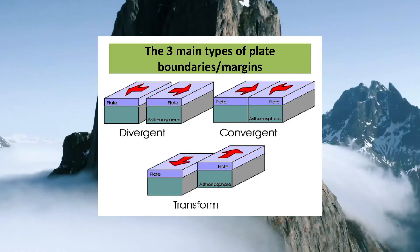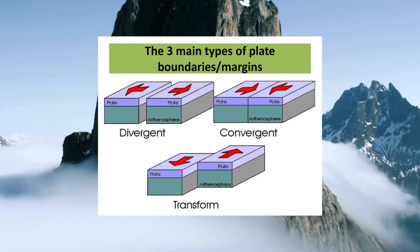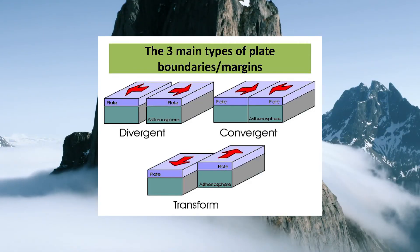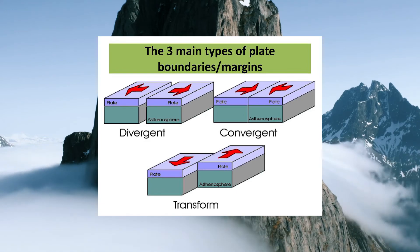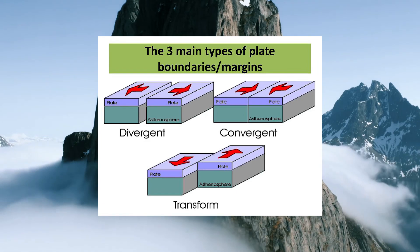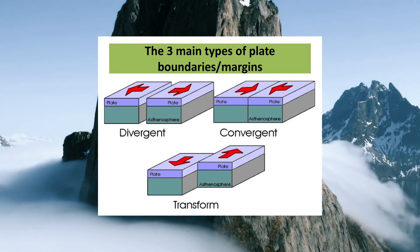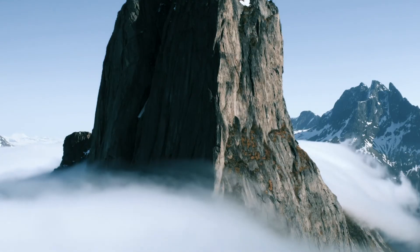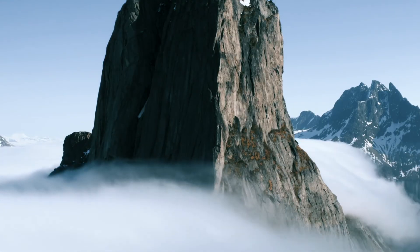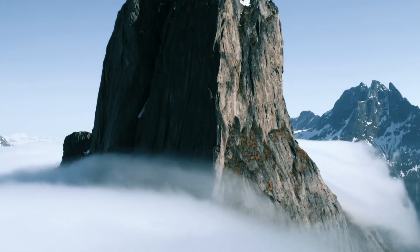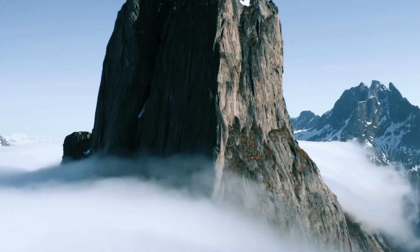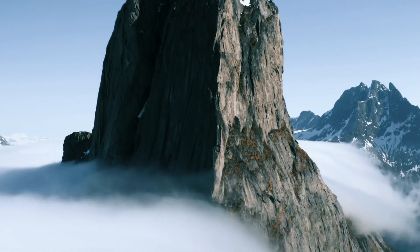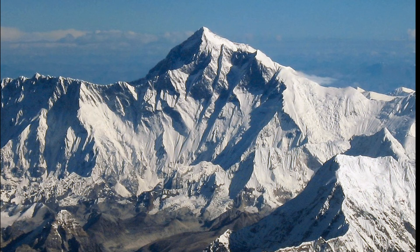There are three primary types of plate boundaries where mountains are commonly formed: convergent, divergent, and transform boundaries. Let's start with convergent boundaries. When two plates collide, the Earth's crust crumples and folds like a rug being pushed together, giving rise to some of the most magnificent mountain ranges on our planet.